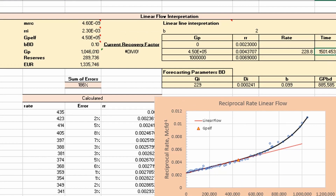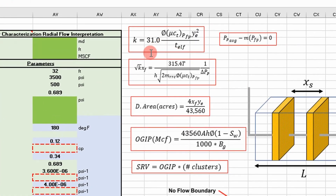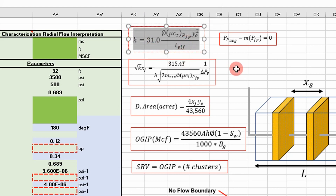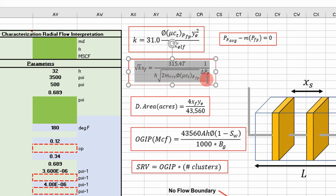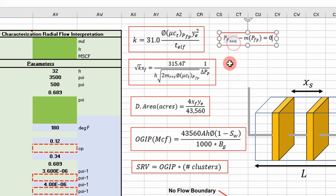This is not the best fit to this production data, but we're going to go with it to show you the mechanics of how to do this. We got our slope and also our time at the end of linear flow calculated from our reciprocal rate cumulative production plot. If you don't remember how to do that, go look at the previous video. These are the equations important to do reservoir characterization using our linear flow interpretation, and I wrote a VBA function for each of these. This average pseudo pressure is difficult to calculate because it requires numerical methods.